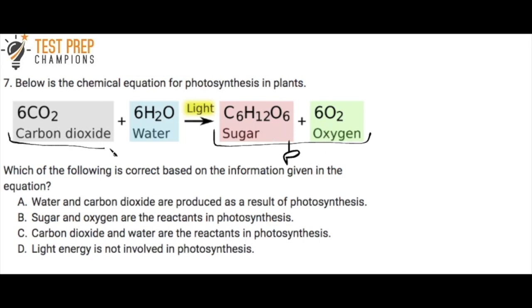Now remember, everything on the left-hand side of the arrow are our reactants, which I'm going to abbreviate as an R. So these molecules on the left-hand side of the reaction are reacting and they're producing sugar and oxygen. So we know that A is false because it says water and carbon dioxide are produced as a result of photosynthesis. No, the sugar and oxygen are produced.